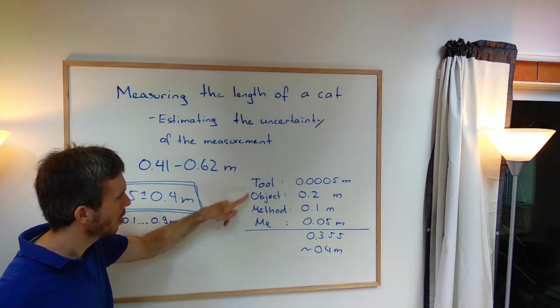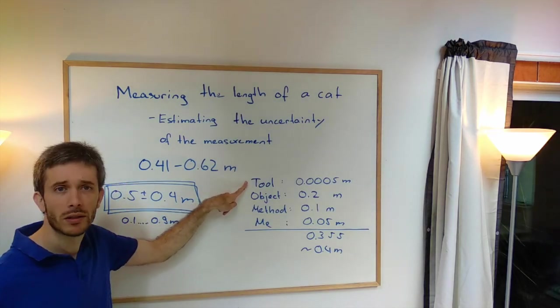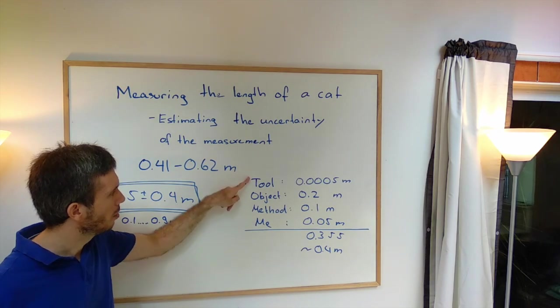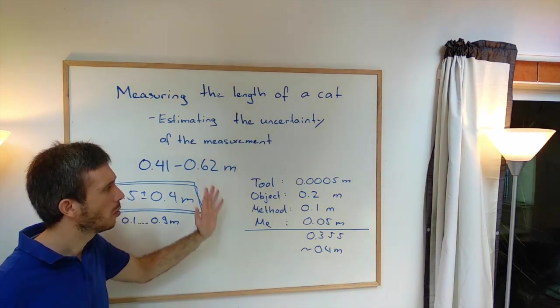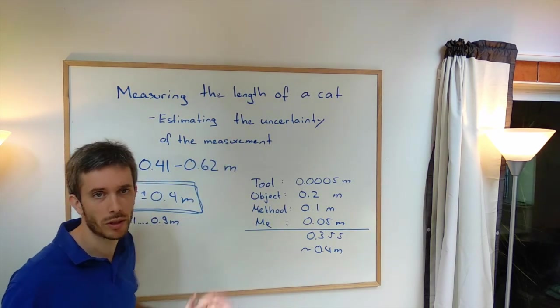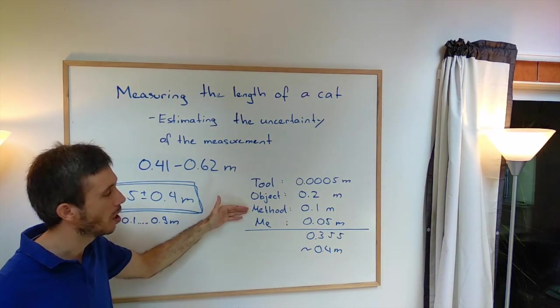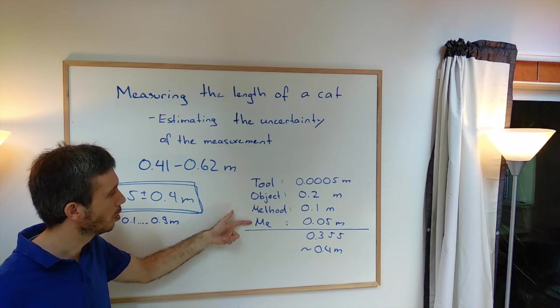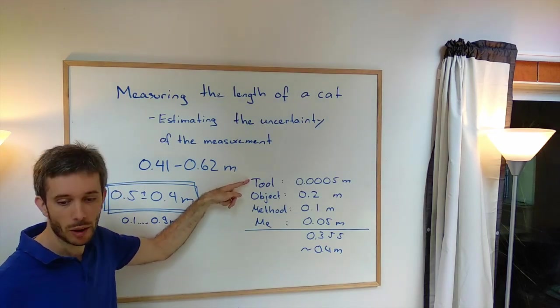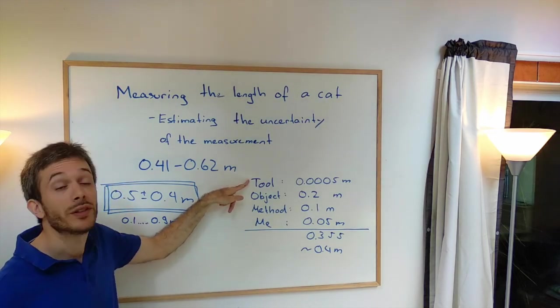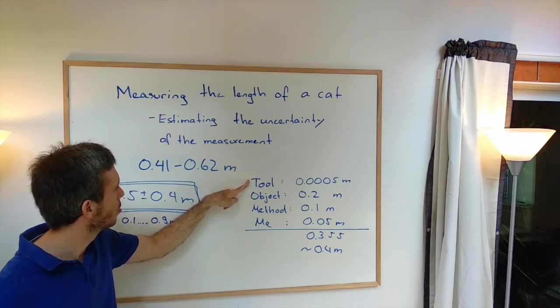And then we looked at the ones that always are blamed: crappy equipment and human error. In this case, they were almost not significant contributors to the uncertainty. The main uncertainty came from the object itself and the method of measurement, not from the human measuring it and absolutely not from the probably 50-year-old meter stick I was using.